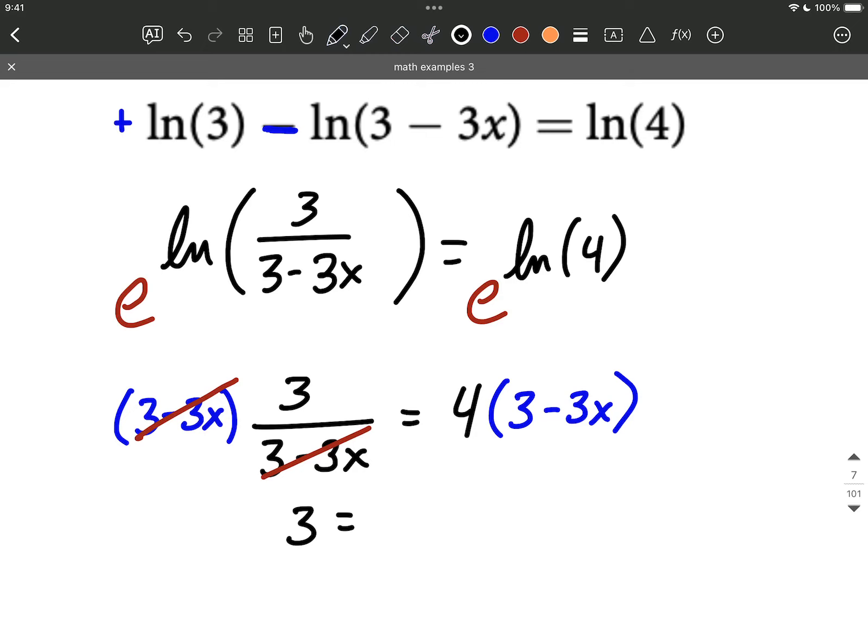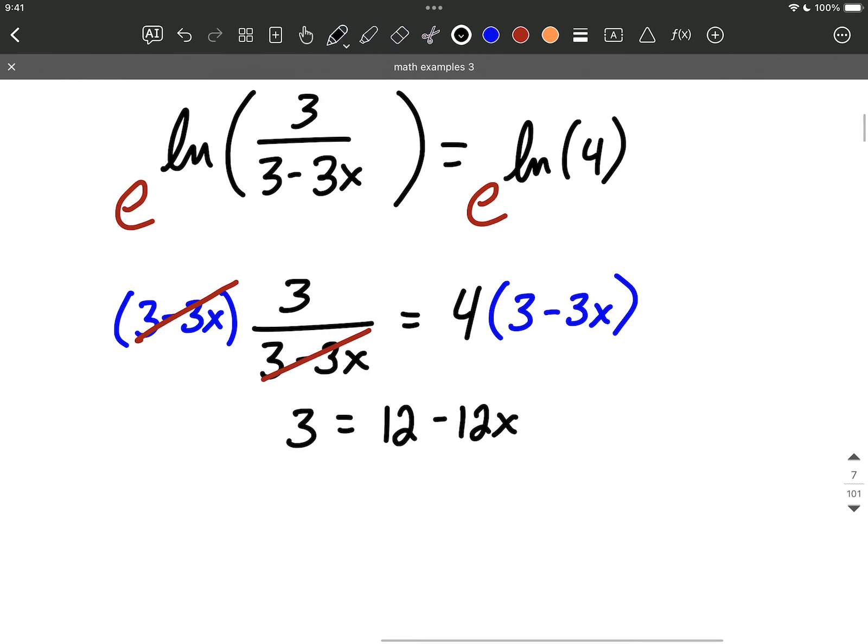So we'll be left with that numerator. The 3 can come down on the left-hand side. A little bit of distributing on the right-hand side. We'll do 4 times 3 makes 12. And then 4 times negative 3x is going to be minus 12x. All that remains in this equation is we've got a linear equation. We want to get all the x's on one side, all the constants to the other side, and then get x by itself.